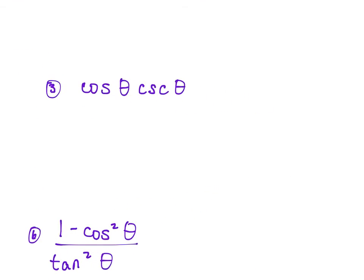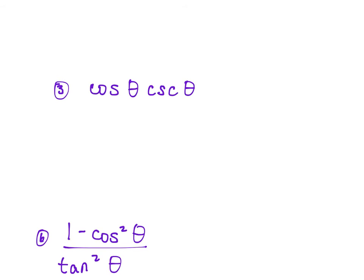Number 3: we have cosine θ times cosecant θ. Cosecant is 1 over sine, so when we multiply, this becomes cosine θ over sine θ. Cosine over sine is cotangent.